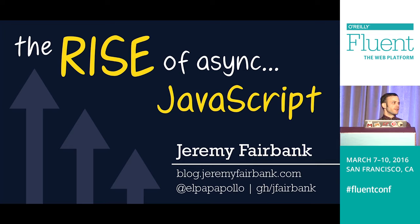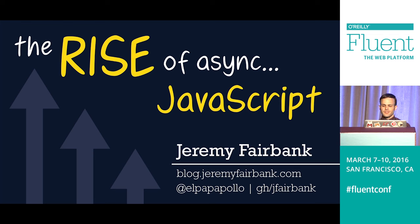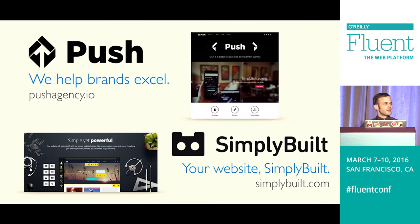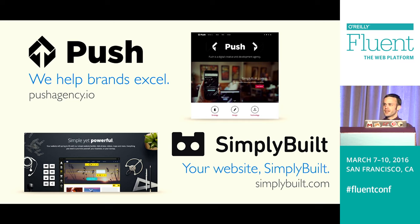My name is Jeremy Fairbank. I have a blog at blog.jeremyfairbank.com. I'm El Papa Pollo on Twitter, and J Fairbank on GitHub. I work for a company called Push Agency — a completely remote team focused on design and mostly front-end work. We also have our own product called Simply Built, which is a website builder and editor, along with domain management and hosting.